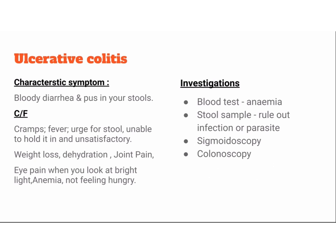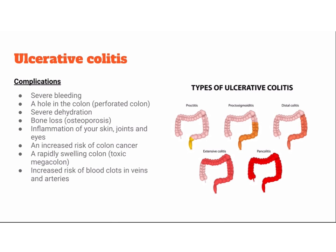Investigations that can be done are blood tests, stool sample to rule out infection or parasite, sigmoidoscopy and colonoscopy. The complications of ulcerative colitis are severe bleeding, perforated colon, severe dehydration, osteoporosis, inflammation of the skin, joints and eyes, increased risk of colon cancer, rapidly swelling colon, and increased risk of blood clots in veins and arteries.